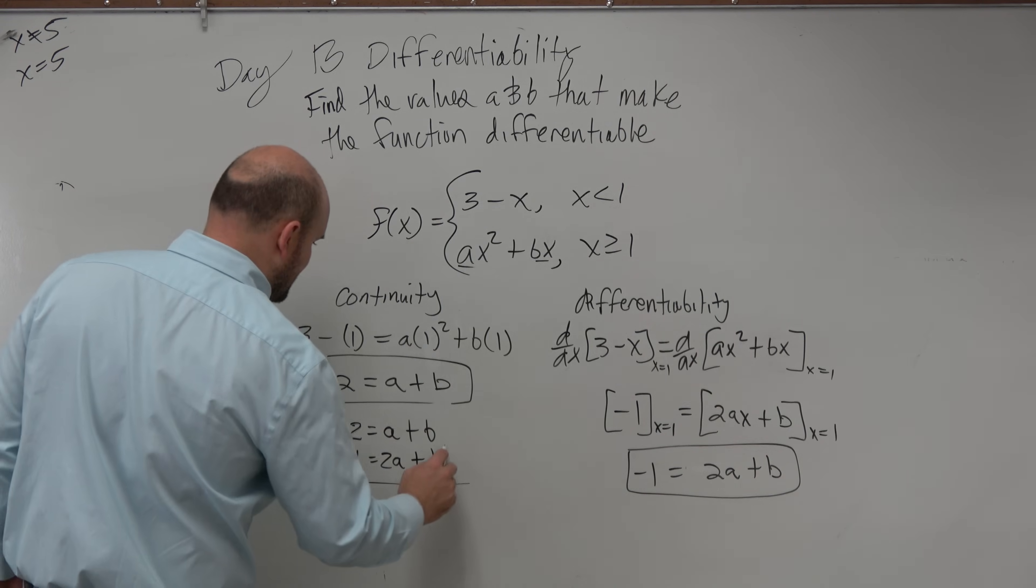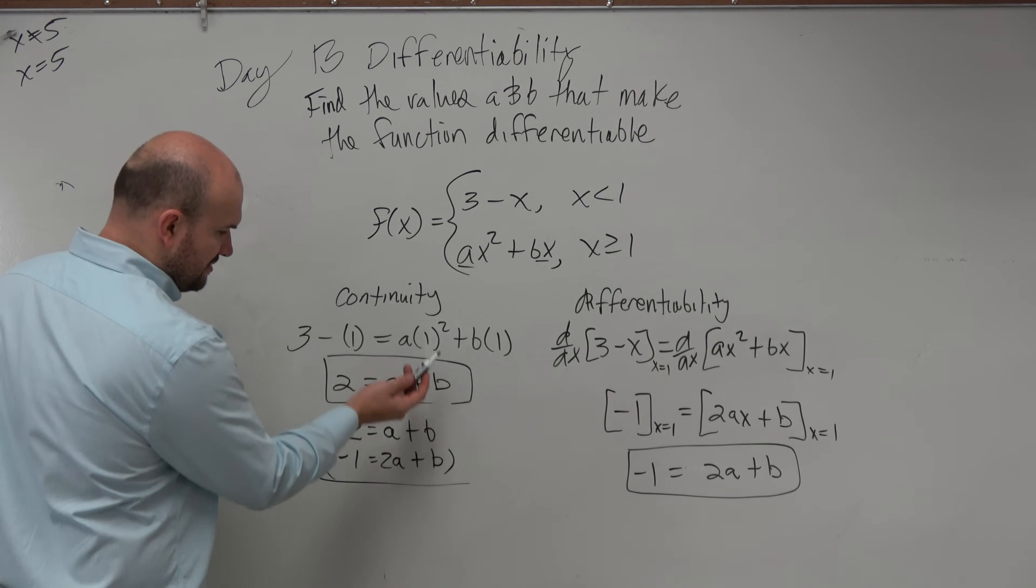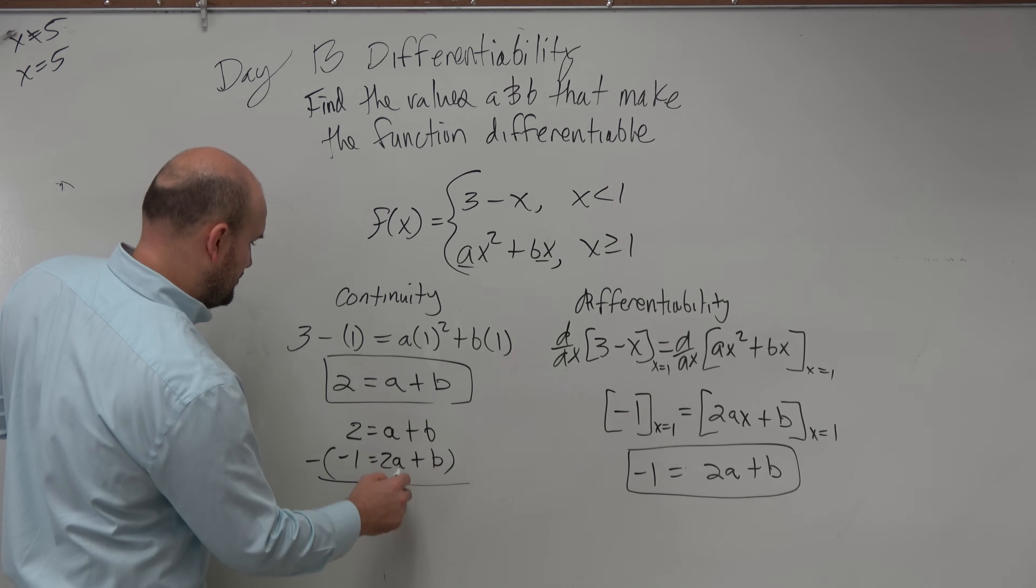So, I am going to use parentheses and subtract the rows. That will get rid of my b's. So, 2 minus negative 1 is going to be 3 equals a minus 2a is going to be negative a. And then, obviously, b minus b, it just goes to 0.